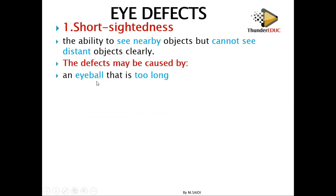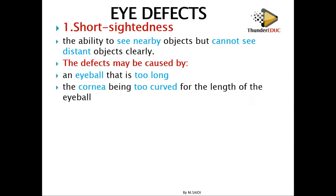This defect may be caused by: number one, the eyeball is too long, meaning the image is formed in front of the retina. Number two, the cornea is too curved for the length of the eyeball, which means the light is being bent too much compared to how it's supposed to be bent, and the image then forms in front of the retina.